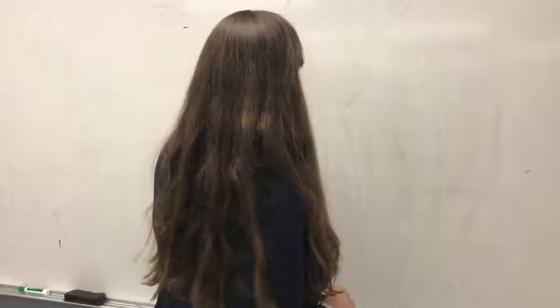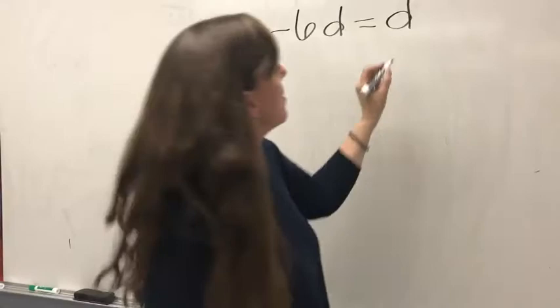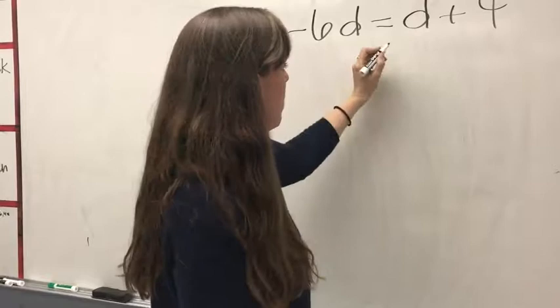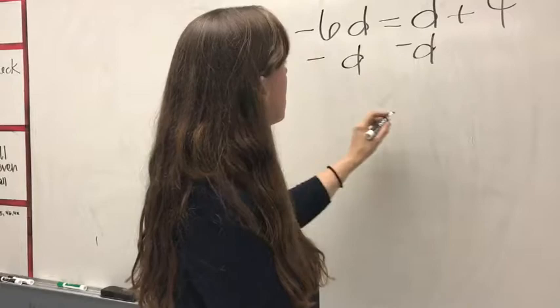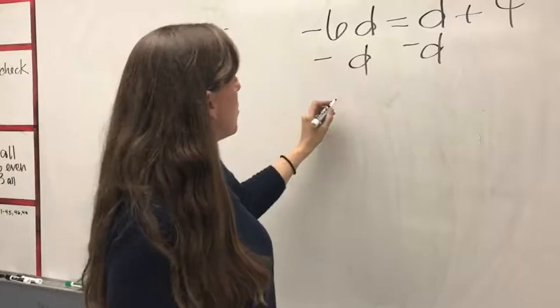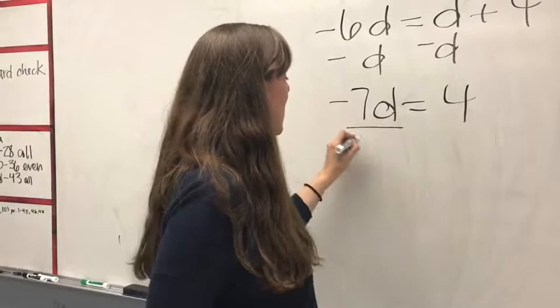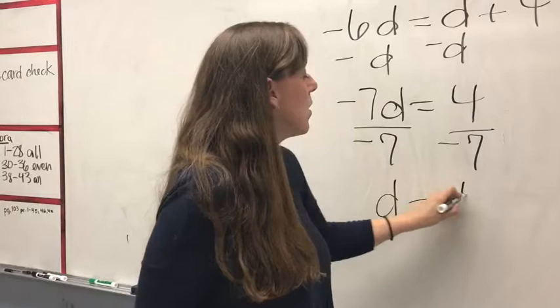Let's do a couple of examples. We have negative 6d equals d plus 4. We're going to subtract d from both sides, giving us negative 6d minus 1d, which is negative 7d equals positive 4. The last step is dividing by negative 7, so d equals negative 4 over 7.